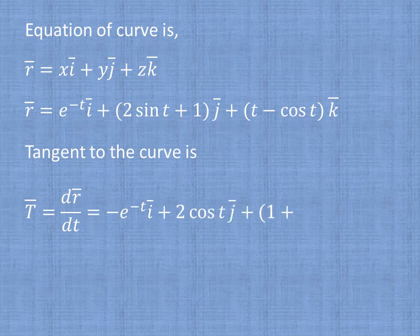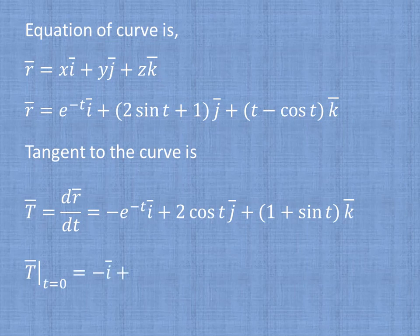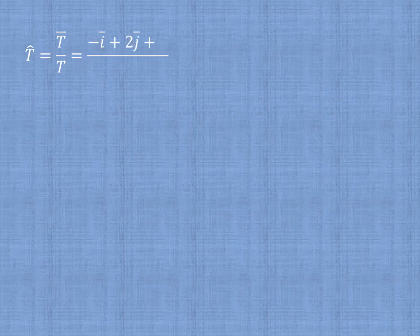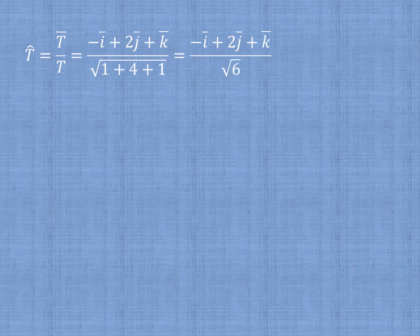At t = 0, T̄ = -î + 2ĵ + k̂. The unit tangent vector T̂ = T̄ / |T̄| = (-î + 2ĵ + k̂) / √(1 + 4 + 1) = (-î + 2ĵ + k̂) / √6.